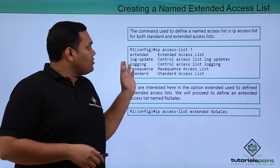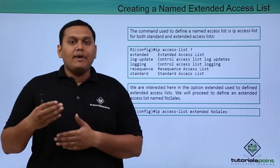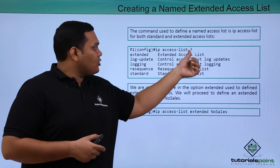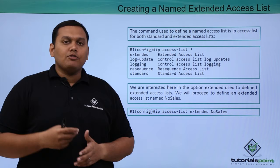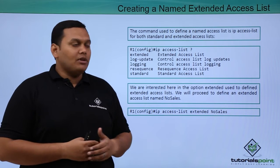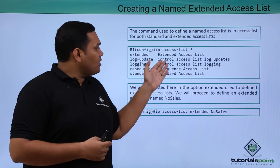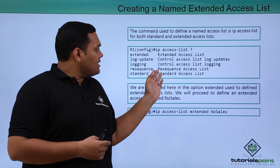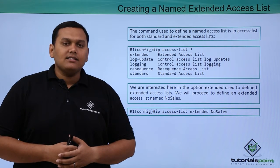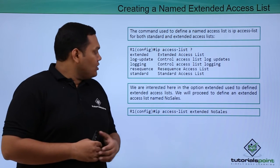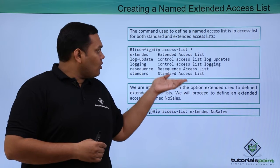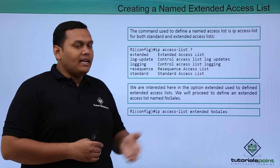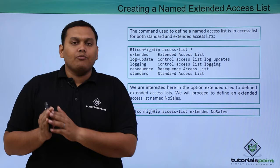The command used to define a named access list is 'IP access list'. If you type 'IP access list ?', it gives you the types available: standard, extended, control access list, control access list logging, resequence access list, and standard access list. We are interested in the extended option, and we have to create an access list with a name.